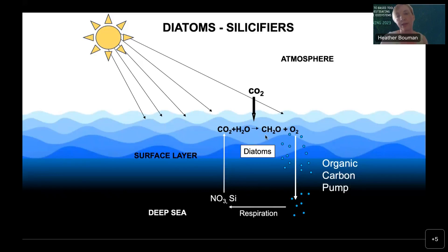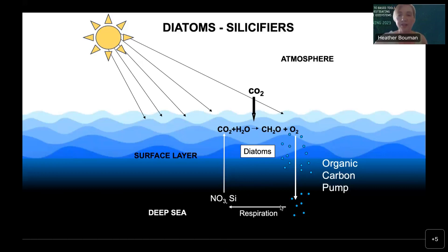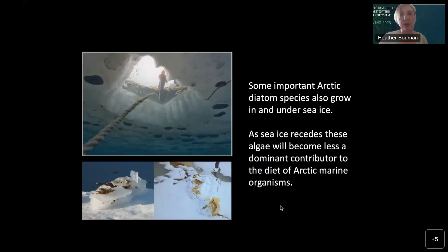Diatoms can form longer chains, especially the centric ones. Because they are very large and have a silica skeleton, they tend to be negatively buoyant — so they tend to sink, playing a very important role in the biological carbon pump. That CO2 they take up through photosynthesis, some of that organic matter does sink to depths sufficiently deep that it's trapped in the deep ocean. Some of that organic matter will be remineralized, and nutrients and silicate will be released back into the water, potentially mixing back up to the surface at a later time.